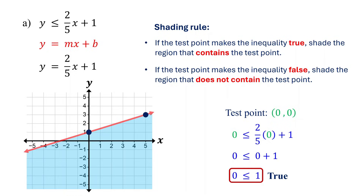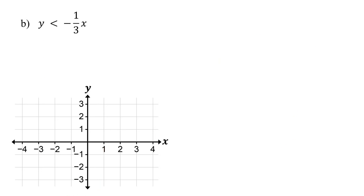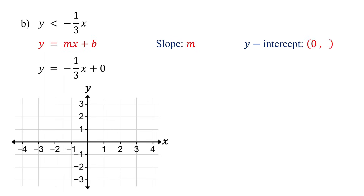Now let's work through an example with a strictly less than inequality. First, graph the boundary line by replacing the inequality sign with an equal sign. Like the previous example, this equation is also in slope-intercept form, but has no constant term. This means b is 0. So the slope is negative one-third, and the y-intercept is 0 comma 0. Now plot the y-intercept which is at the origin.